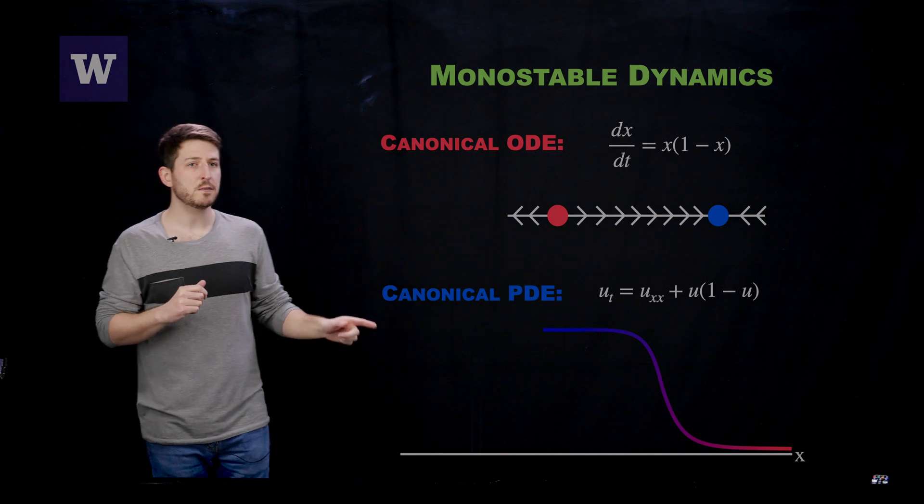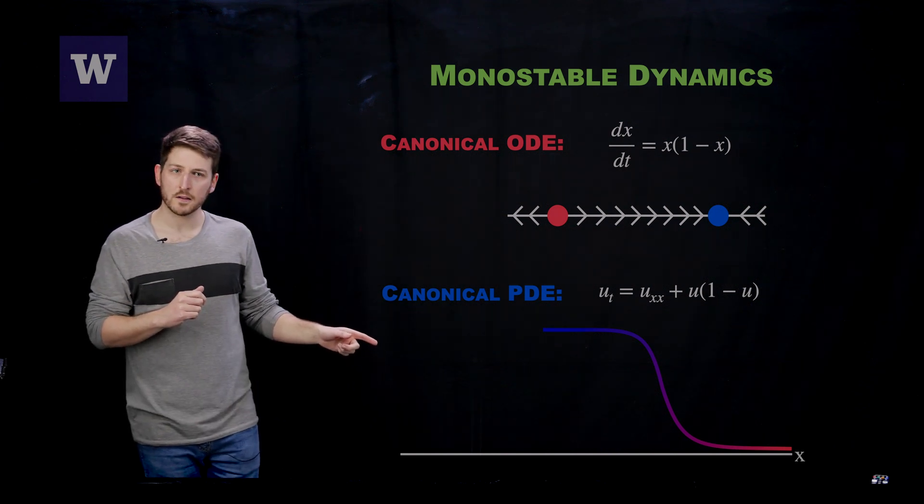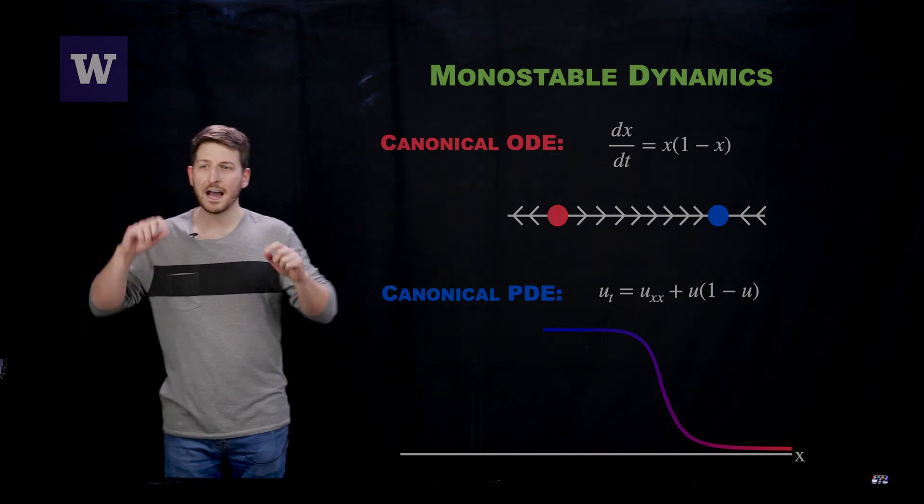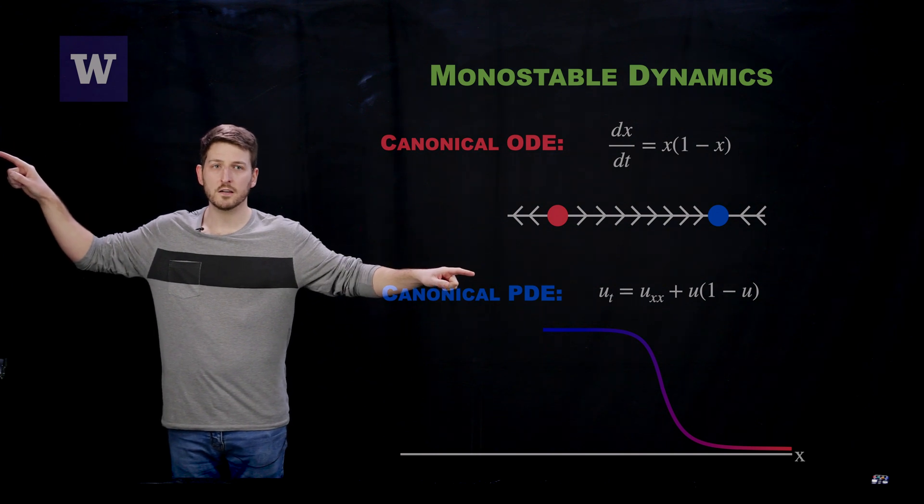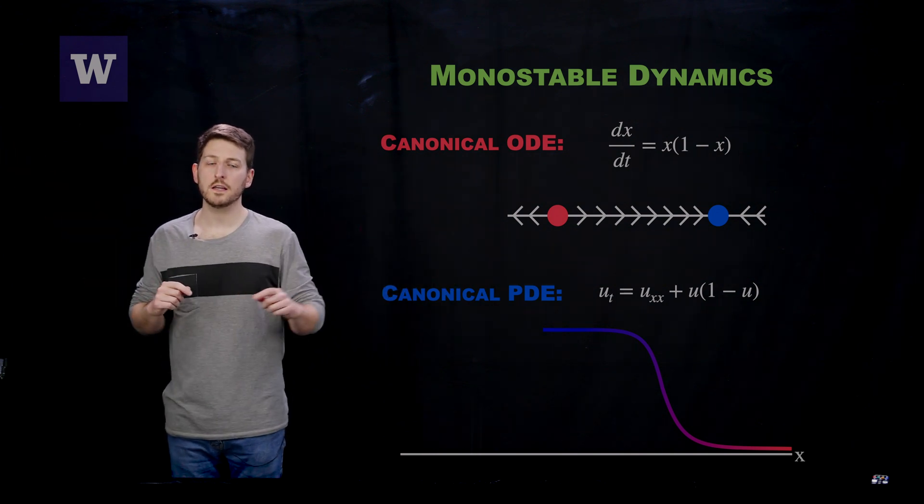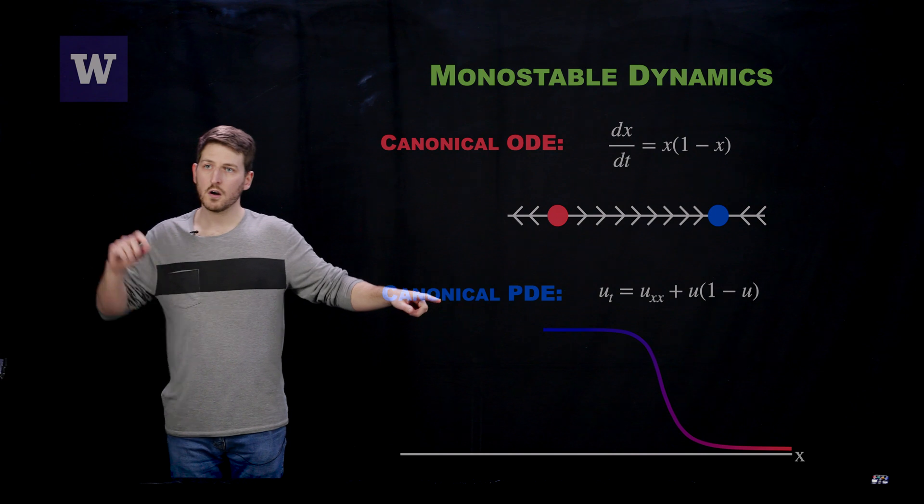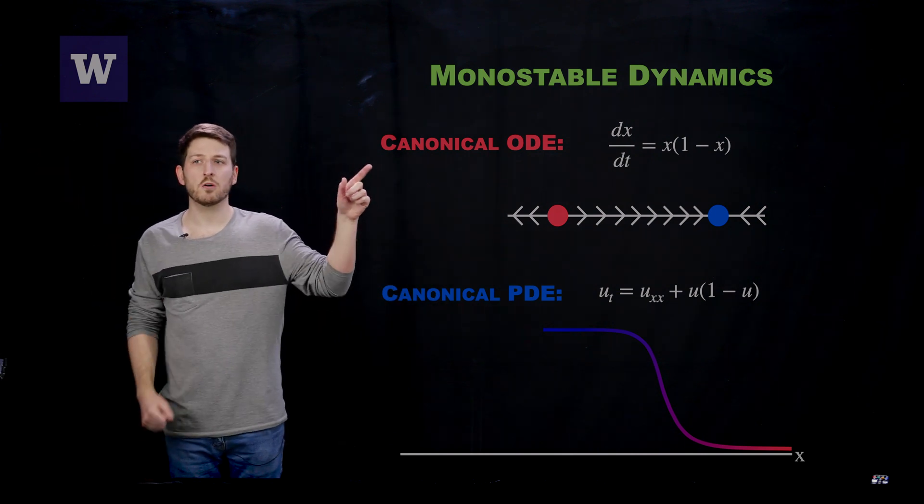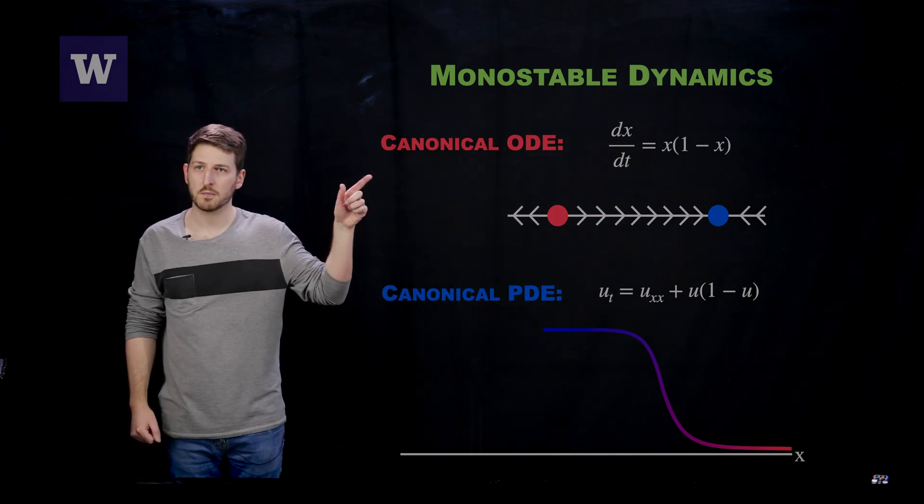These are solutions that hold an approximate arctangent profile and they move across space at a constant velocity. You can see by the color gradients on this wave that as you extend asymptotically, you are approaching either the extinction state or the persistent state from your non-spatial logistic model.